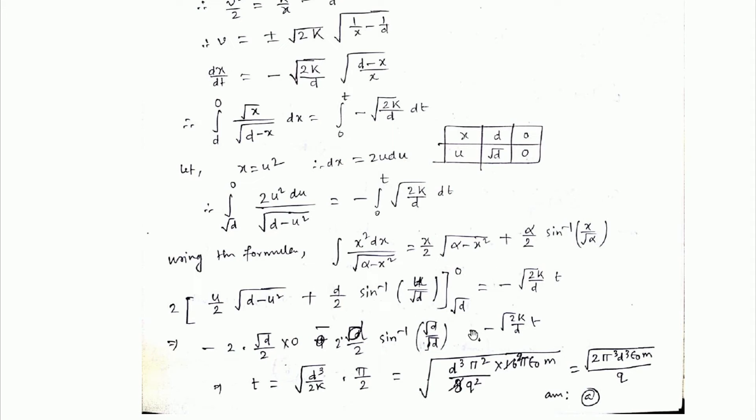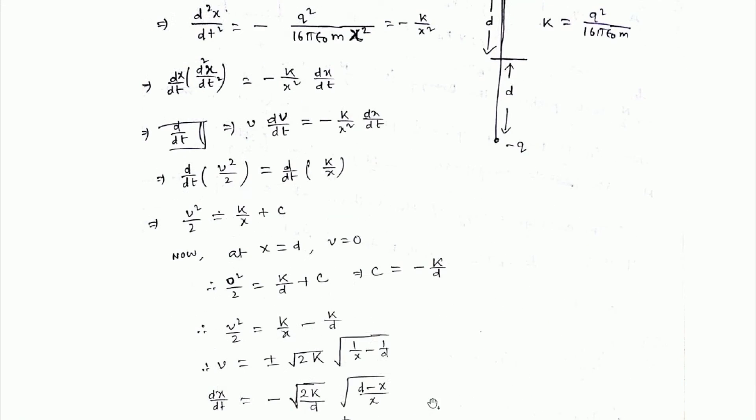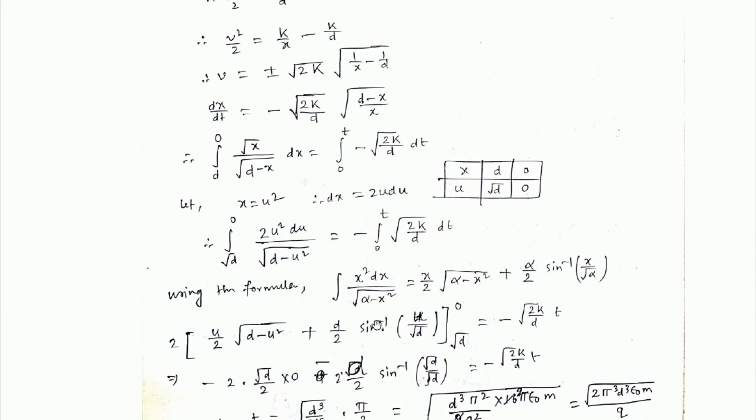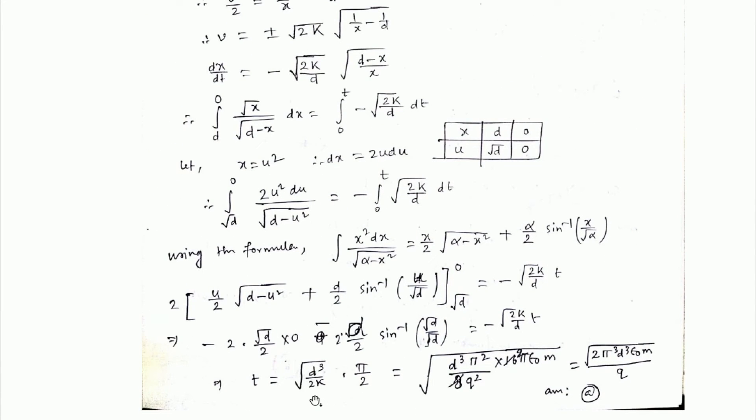We put the limit and we find that t equals √(d³/2k) times π/2. We replace the value of k from this expression: k equals q² / (16πε₀m).